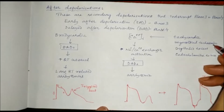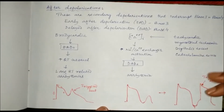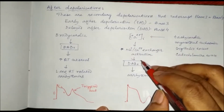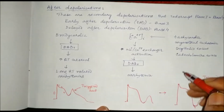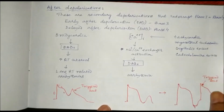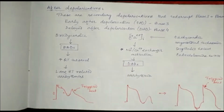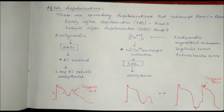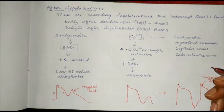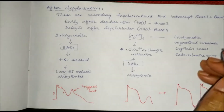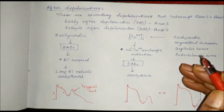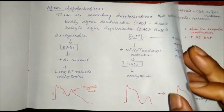Similarly, when there is myocardial ischaemia, digitalis toxicity, or catecholamine excess, there will be increased intracellular calcium, activation of the sodium-calcium exchanger, and there will be delayed after depolarizations which result in arrhythmia. In all these cases there will be involvement of sodium, calcium, or potassium channels. Depending on the situation, we can use a sodium channel blocker, calcium channel blocker, or potassium channel blocker.